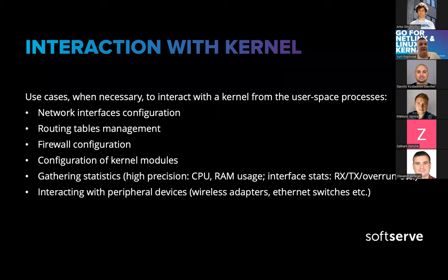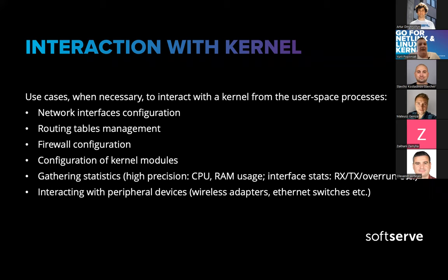Another use case to interact with the Kernel from user space applications is when you have kernel modules that expose a possibility to interact with user space directly, or when you want to gather statistics — like collecting high-precision CPU, RAM, and other metrics about another process. For example, interface stats: received and transmitted packets, bytes, and error counts. And last but not least, interacting with peripheral devices connected to your CPU — it could be wireless adapters, Ethernet switches, and many more.